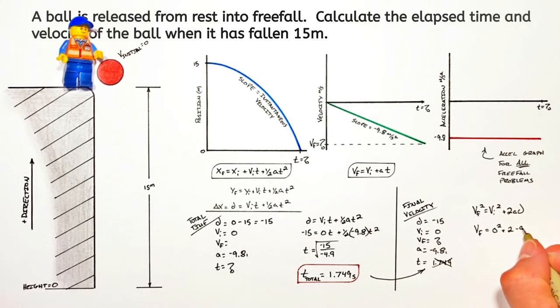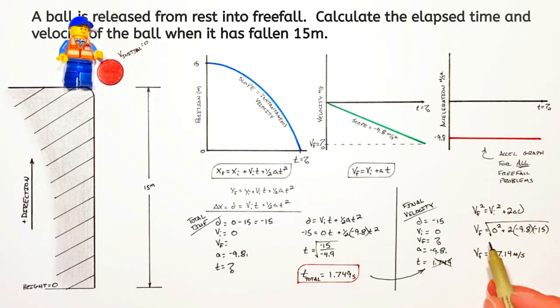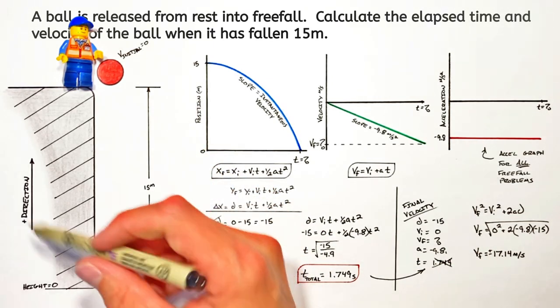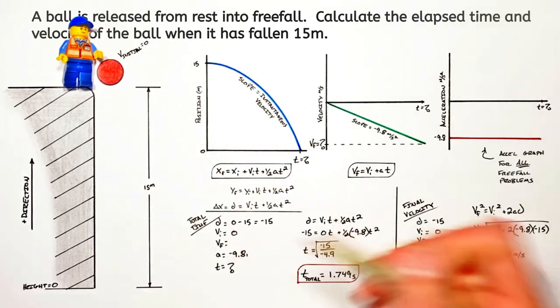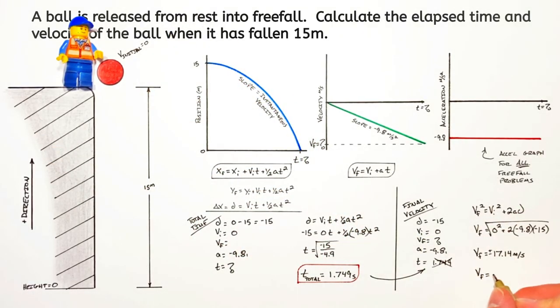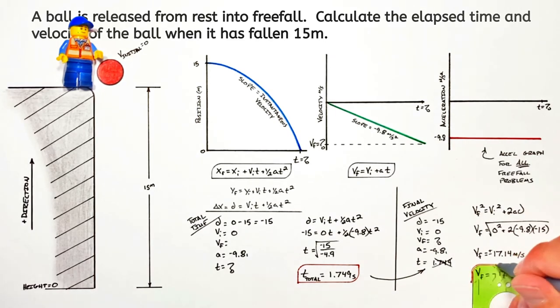So plugging in the variables we know into this equation, we can solve for the final velocity. Now your calculator is going to spit out a final velocity of 17.14 meters per second, but you've got to be careful here. You see, you took a square root of a number, and any time you take the square root of a number, the result can be positive or negative. Let's go back to the beginning here. We said up was positive. So if the ball is moving downward when it lands or gets to the bottom of the cliff, we have to decide whether that result is going to be positive or negative. Downward is negative. So the final velocity of the ball is actually negative 17.14 meters per second.